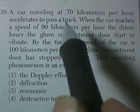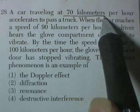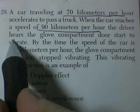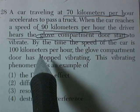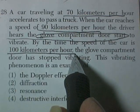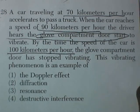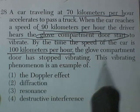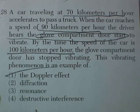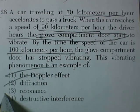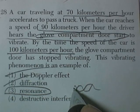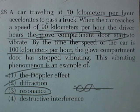Question 28. I hate when this happens. You're driving along at some speed, 70 kilometers per hour. They accelerate, you reach 90 kilometers per hour, and you get a rattle in the glove compartment door. By the time the speed of the car is 100 kilometers per hour, the glove compartment door has stopped vibrating. This vibration is an example of. Well, Doppler effect is the sound when something goes past you. Diffraction is the bending of waves around a barrier. Resonance. That's the correct answer. And destructive interference is when one wave from a source and another wave from a source interfere to produce nothing. So the correct answer is resonance.